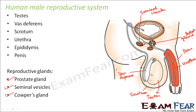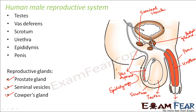Here you have the testis which is enclosed inside the scrotum. From the testis you have a coiled tube-like structure called epididymis, and then this epididymis opens into the vas deferens. From epididymis arises the tube-like structure called vas deferens, and then this vas deferens finally joins the urethra. Through urethra it opens to the exterior — that is how the internal structure is.